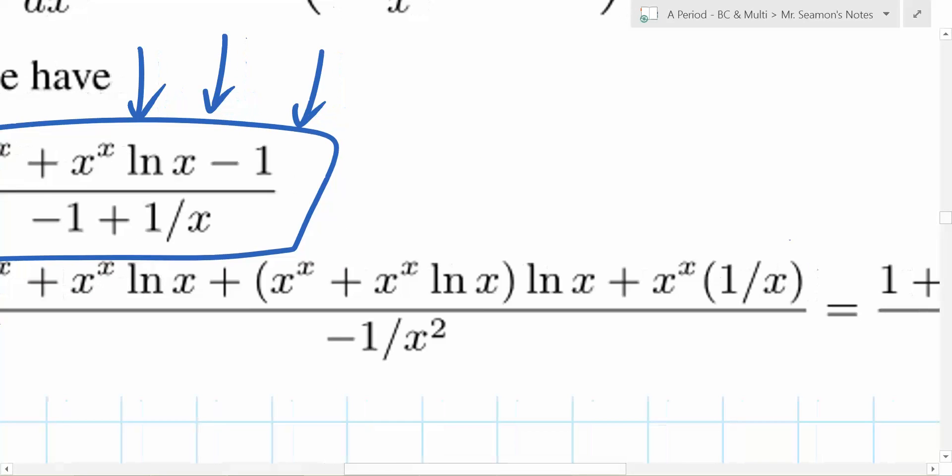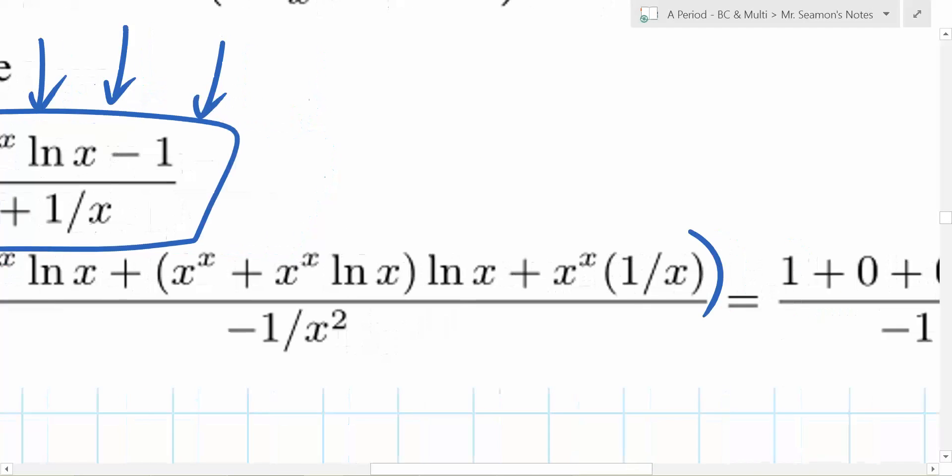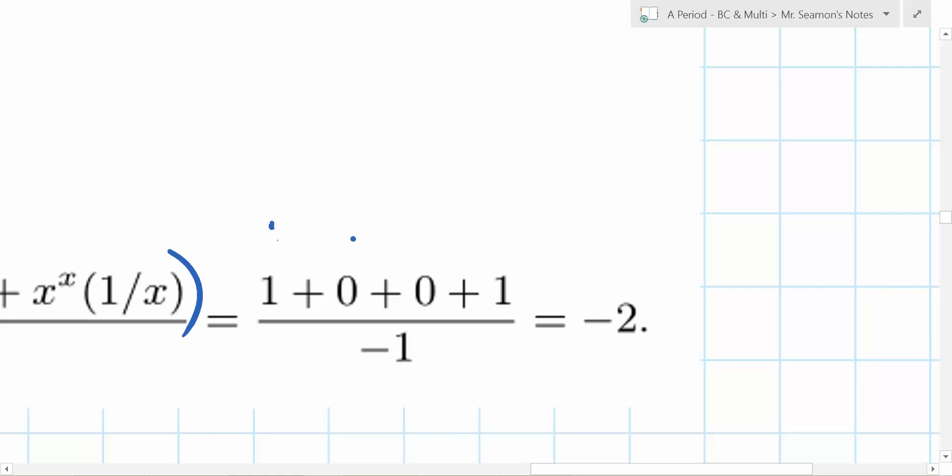So you might think to yourself, man, why would I do that? Well, you do that because guess what? It evaluates to 1, 0, 0, 1. It comes out to negative 2. Sometimes the algebra gets nasty. That's what I'm just trying to communicate to you. Sometimes the algebra gets a little weird. That's what you have to remember at this point.